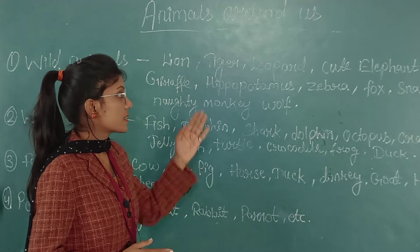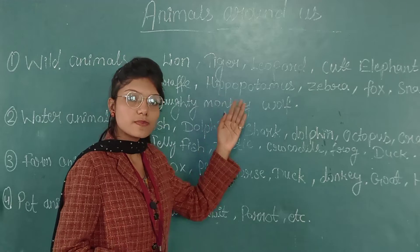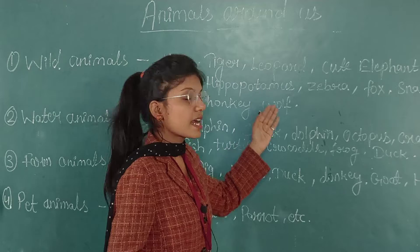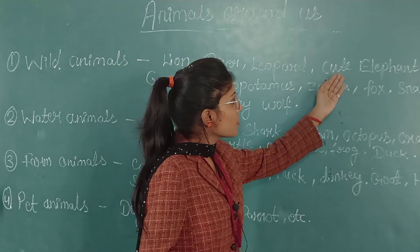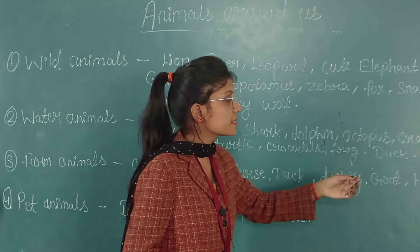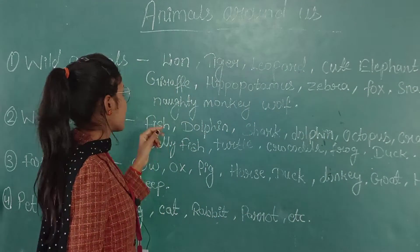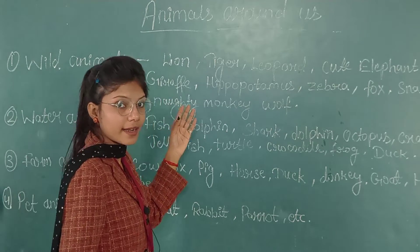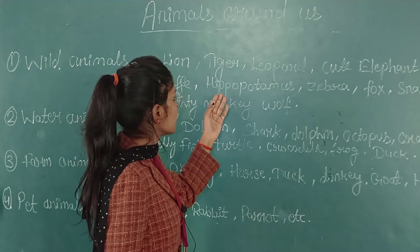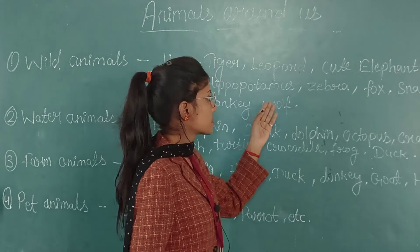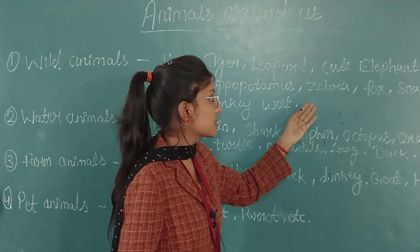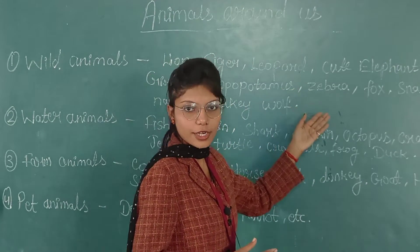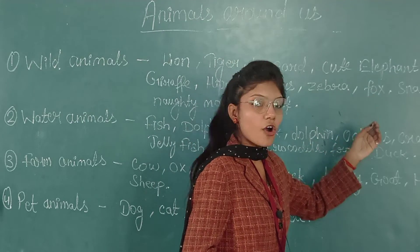Then tiger, with the black stripes over his body. Now leopard — he runs very fast. Now huge elephant, bear. Next one is giraffe — you know giraffe has a very tall neck. Now the big fat animal, hippopotamus. Now zebra, with black and white stripes over his body.